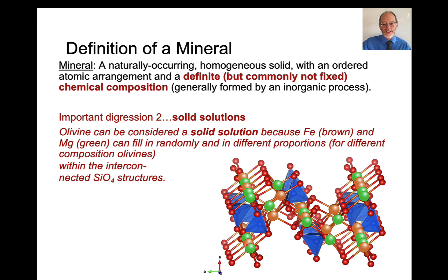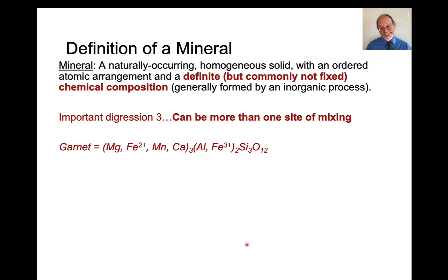In the octahedral site, iron and magnesium can mix randomly. There can be more than one site of mixing, which is one of the things that makes solid solutions complicated. Garnet has two different sites where mixing commonly occurs: a larger cubic site and a smaller octahedral site, which can take different cations, resulting in solid solution among multiple components.